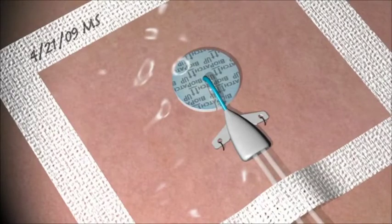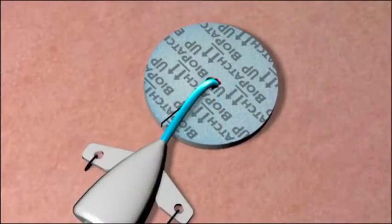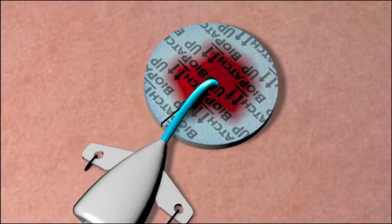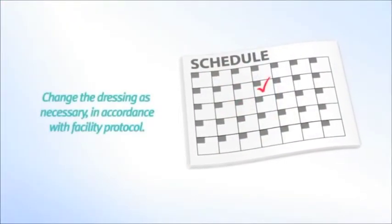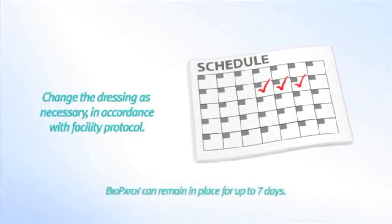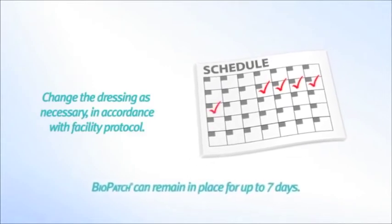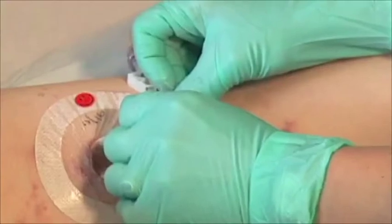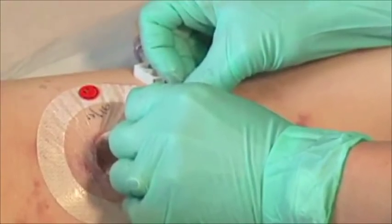Secure the catheter and BioPatch to the skin with a transparent dressing and date it consistent with hospital protocol. BioPatch will absorb up to eight times its weight in fluid and remains effective in the presence of blood and wound fluid. Dressing changes should occur at least every seven days, however dressing changes may be needed more frequently with highly exuding wounds.